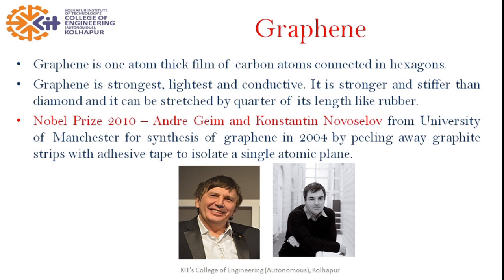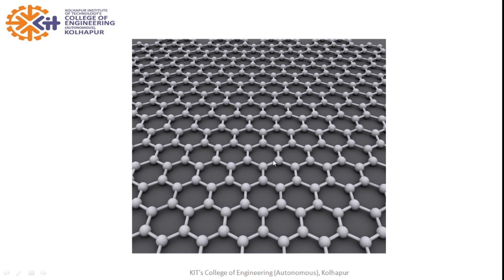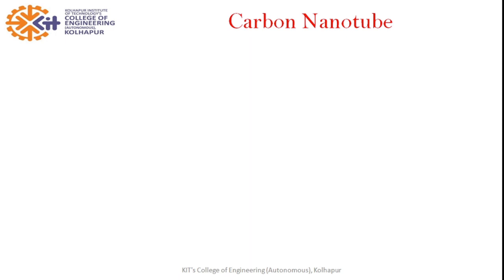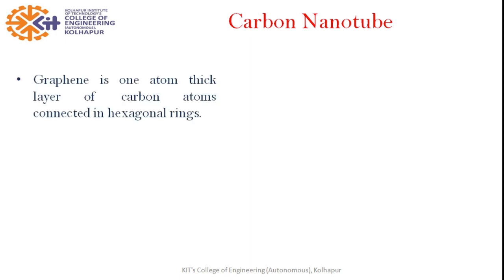This is graphene — a one-atom-thick layer of carbon. We can see the carbon atoms interconnected into hexagons, with covalent bonds between them. All the sides of each hexagon are nothing but the covalent bonds between carbon atoms. The graphene is one atom thick layer of carbon atoms connected into hexagonal rings, and the rolled-up sheet of graphene is called a carbon nanotube.